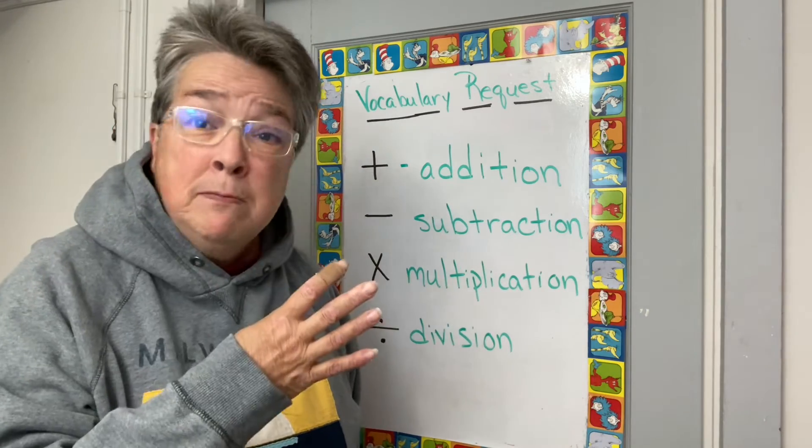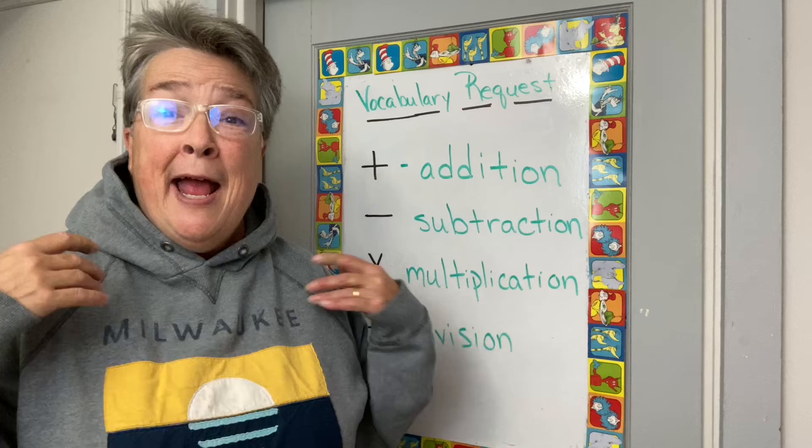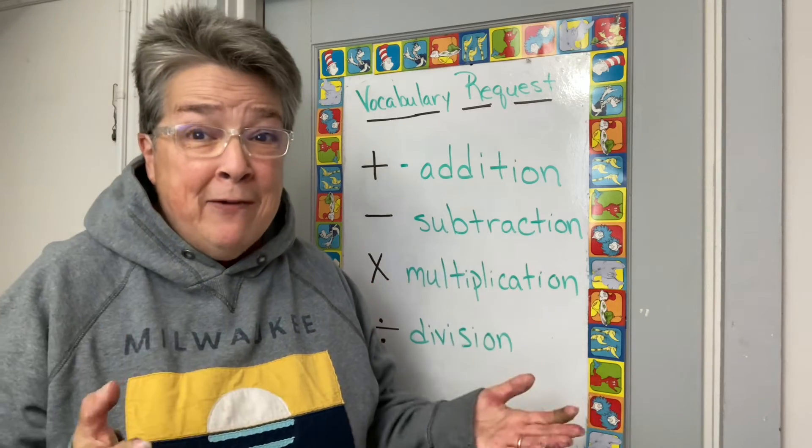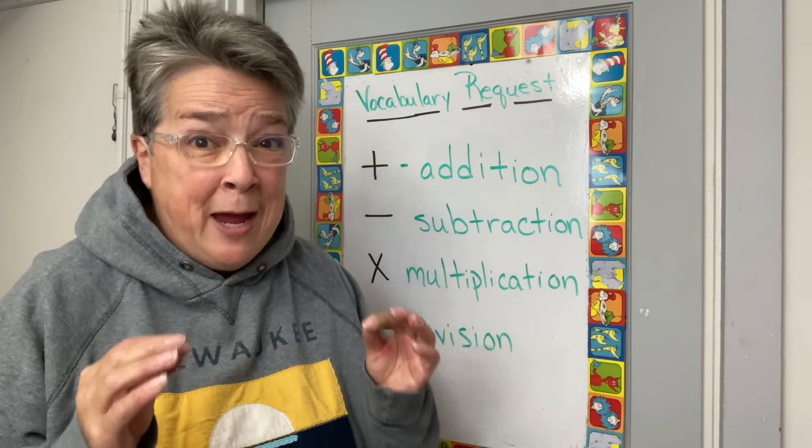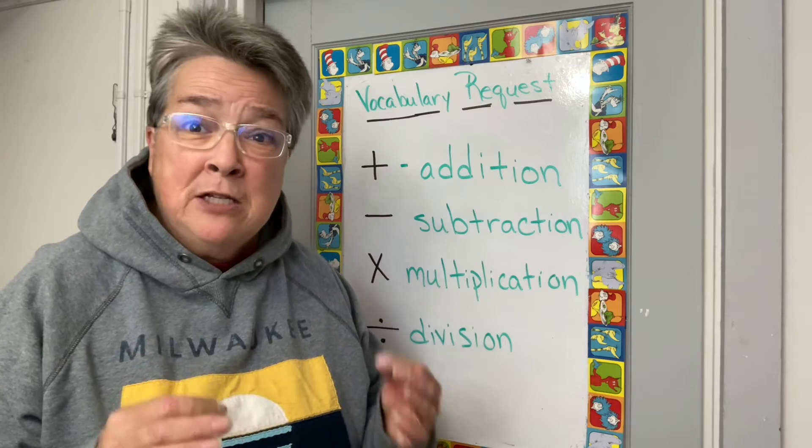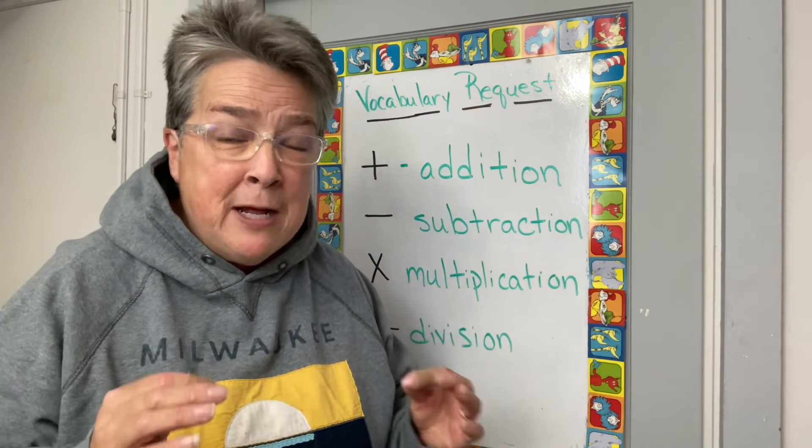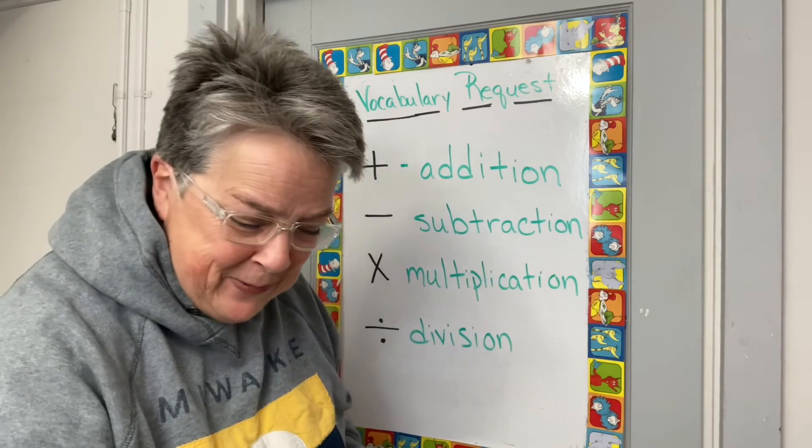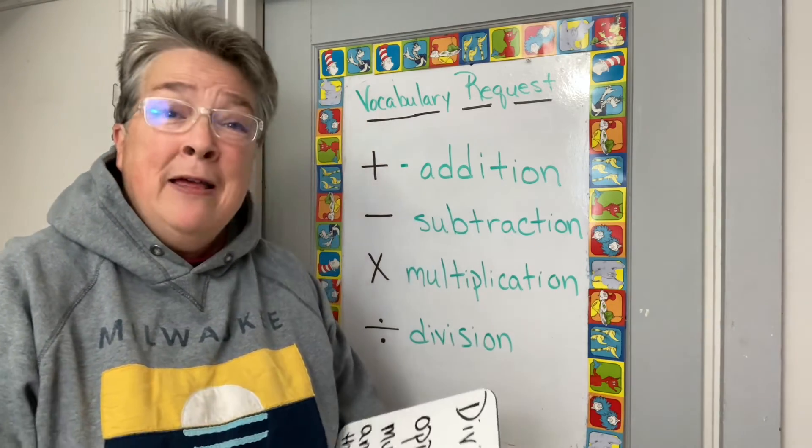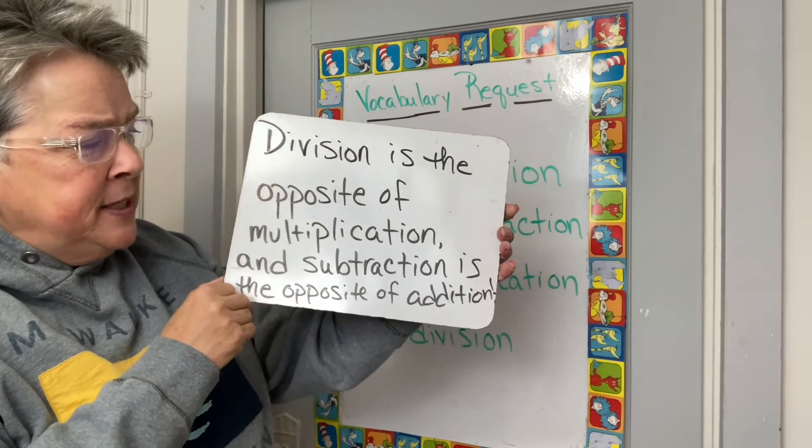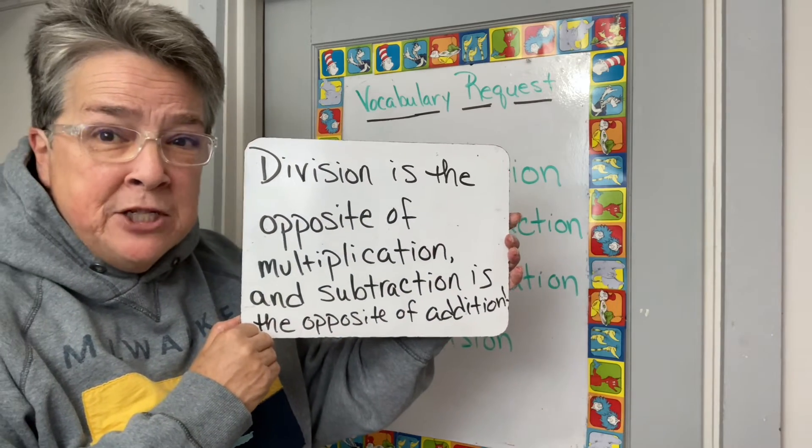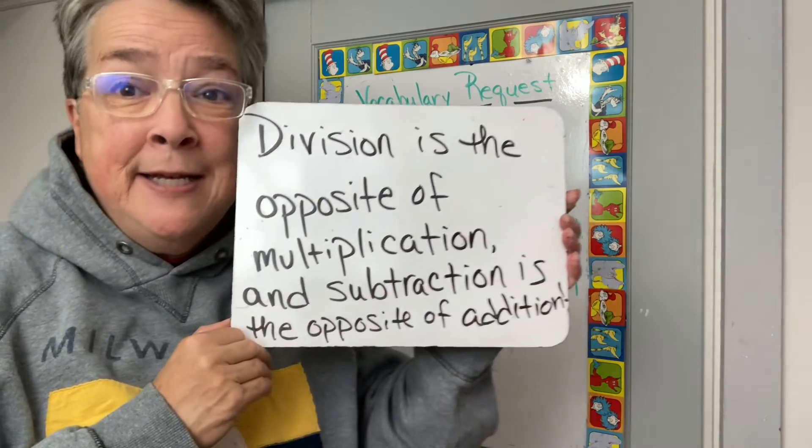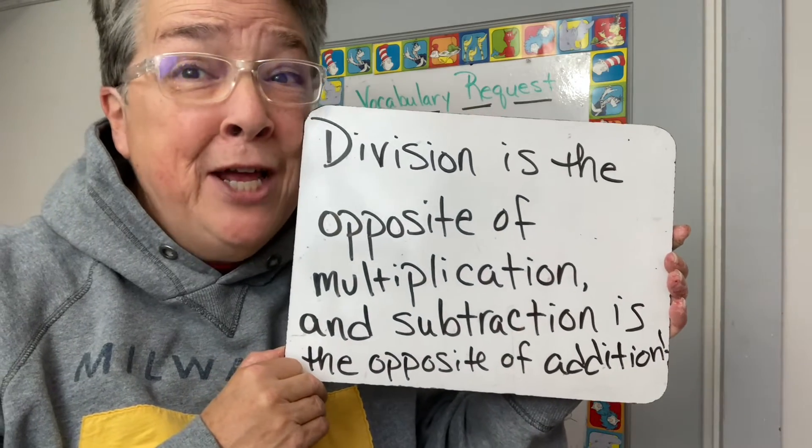Four symbols. Four pretty big words. All for a mathematical vocabulary request. Why does English have so many words that are so fun to pronounce? I don't know. But now you can read and pronounce this sentence. I hope. Division is the opposite of multiplication. And subtraction is the opposite of addition.